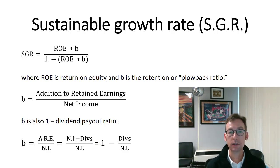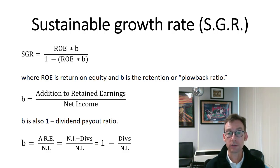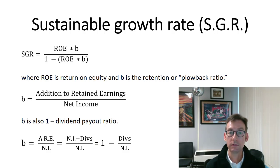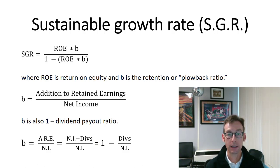There are a couple of ways we can get to the plowback or retention ratio. The easiest one is to just take addition to retained earnings and divide by net income — what proportion of accounting earnings are we keeping inside the firm. Net income flows to only two places: addition to retained earnings, and dividends. So any money not paid out as dividends is part of the addition to retained earnings, meaning the proportion not paid out as dividends must be the retention ratio. We could also take one minus the dividend payout ratio, which is dividends divided by net income.